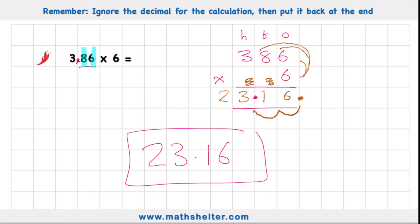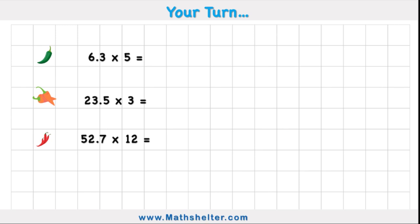And that's as simple as it has to be. All we need to do is ignore the decimal from the calculation and then put it back at the end, decided by how many numbers after the decimal I have ignored. So now it's your turn. Have a go at these three questions here.